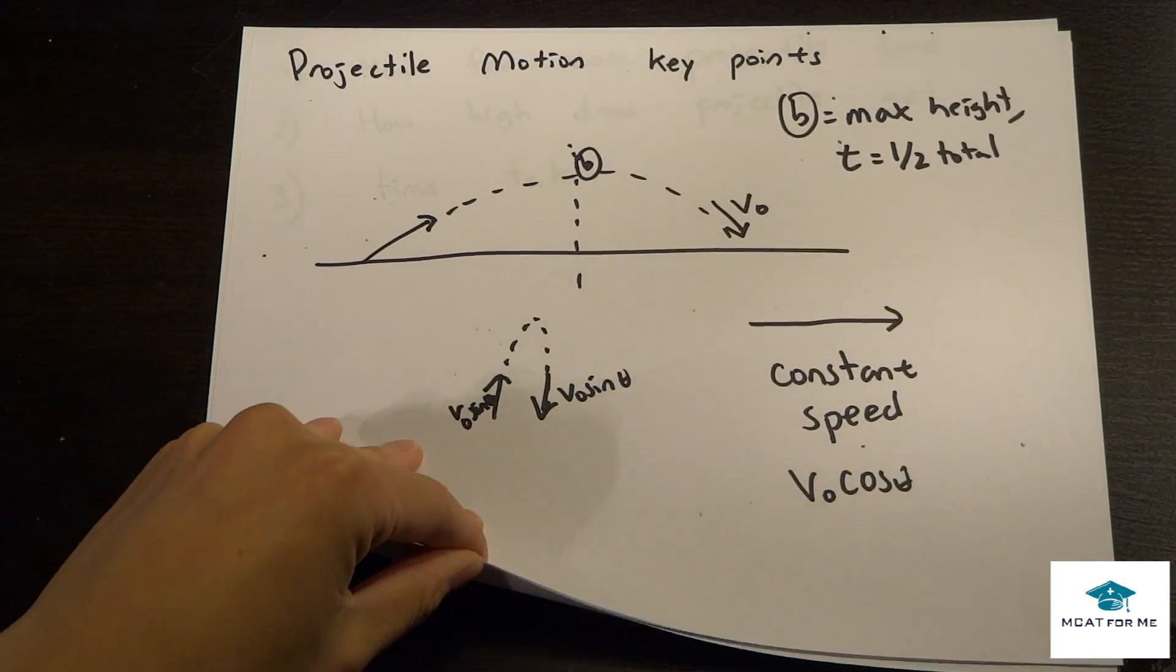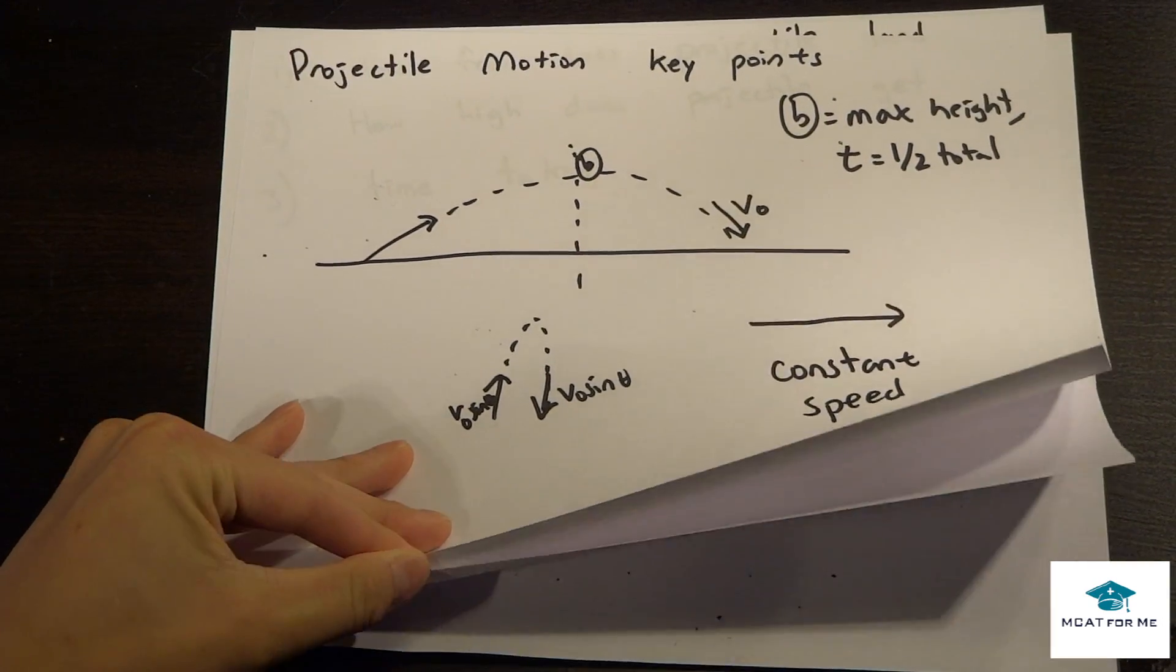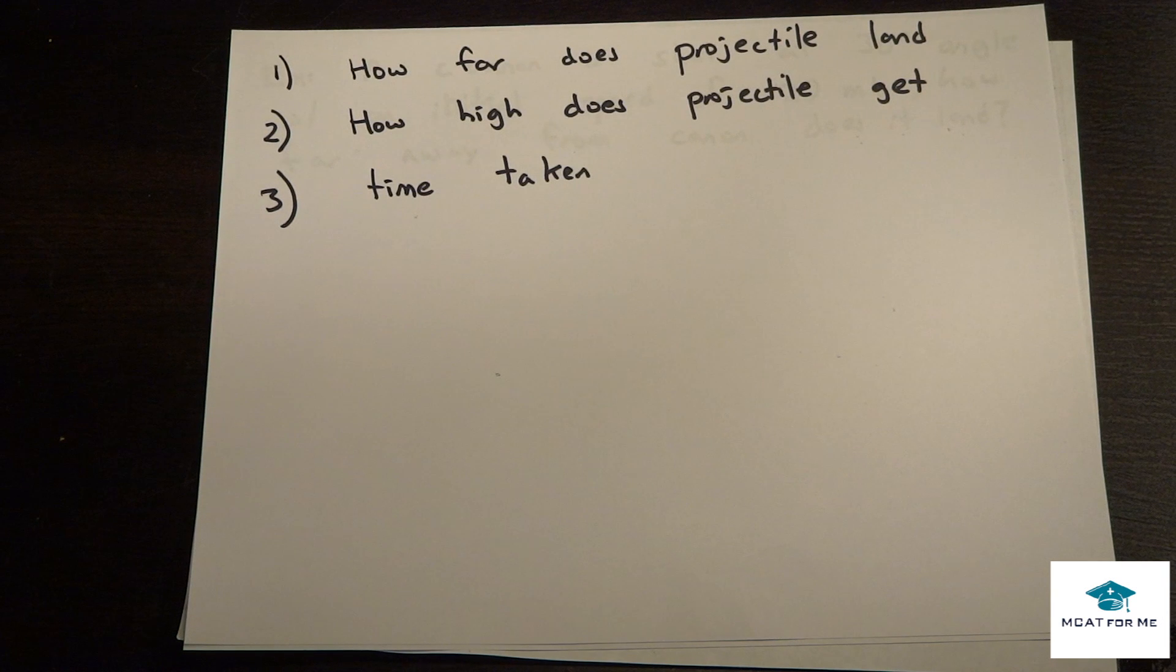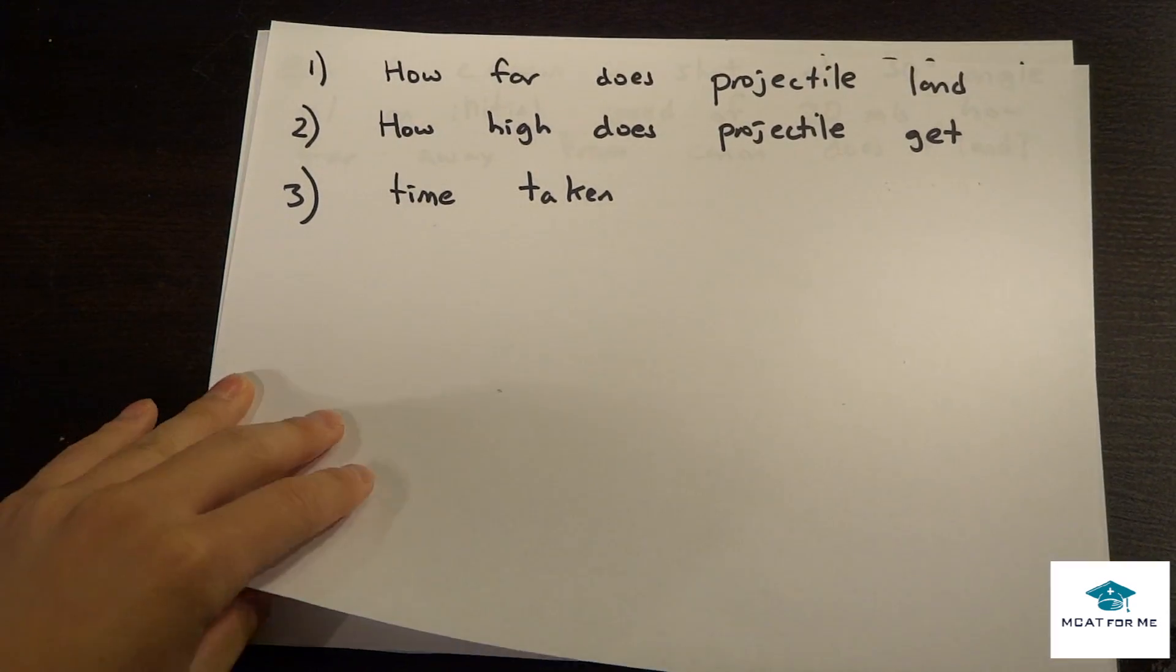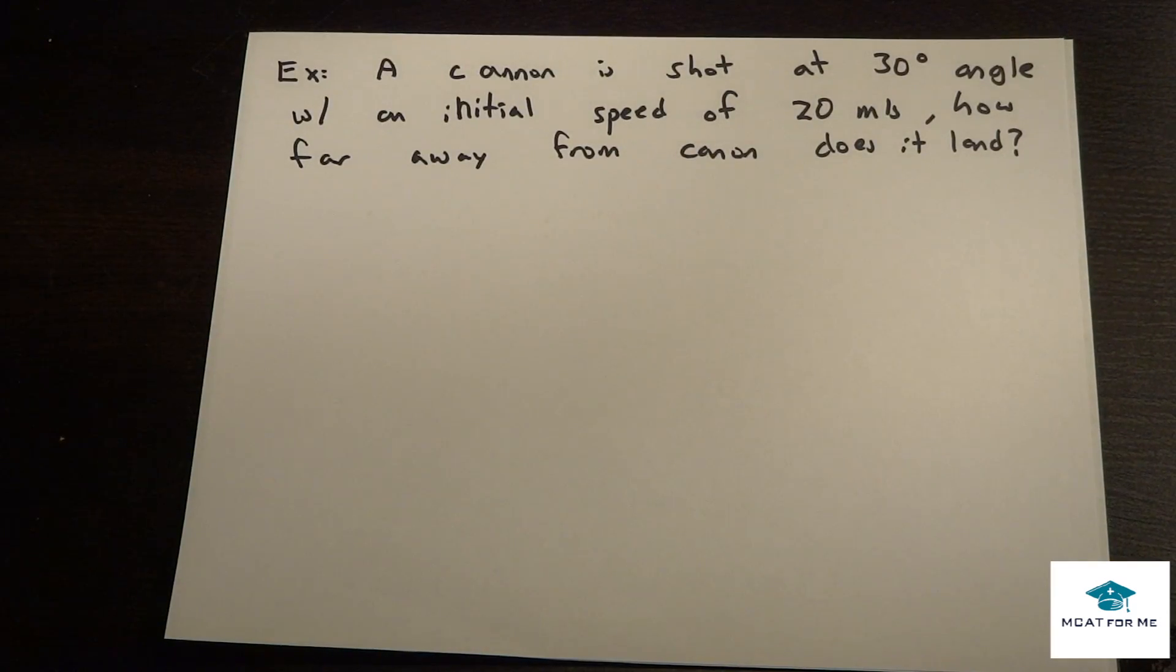Now let's see what type of questions they could possibly ask. The typical questions are: how far does the projectile land, how high does it get, and the time it takes. The one thing we need to know is that projectile motion is no different from any other type of free fall problems or uniform acceleration motion. They're all the same, we're just presenting it in a different way. This question says: a cannon is shot at 30 degrees with an initial speed of 20 mps. How far away from the cannon does it land?